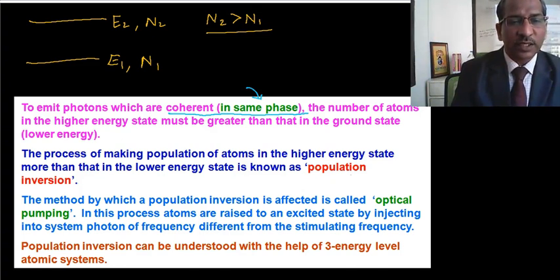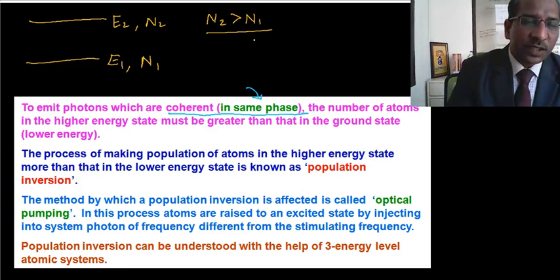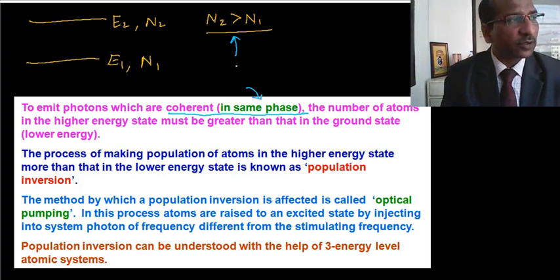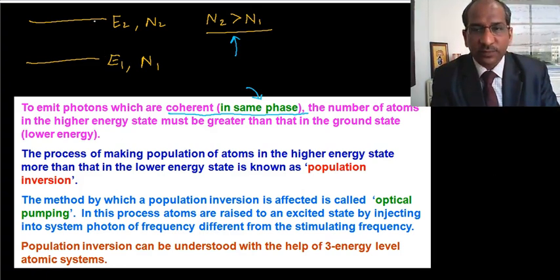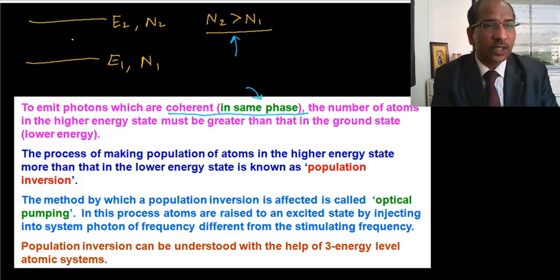And the second point is the process of making the population of atoms in the higher energy state more than that in the lower energy state is known as population inversion. If we achieve this kind of situation, then only we can say we have achieved population inversion. Or if you are talking about the concept, it means it is very clear. Earlier here N1 was the number of atoms in the ground state which were larger compared to N2. But right now we are saying that N2, the number of atoms in the excited state, are larger. So population has been inverted.